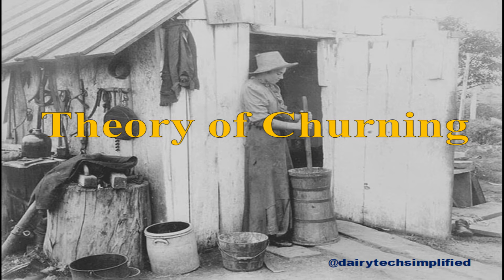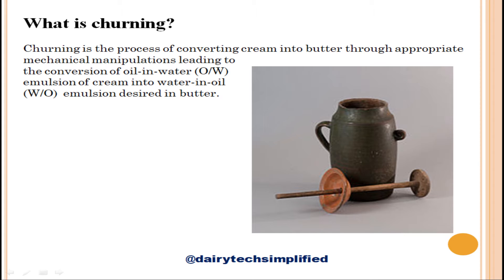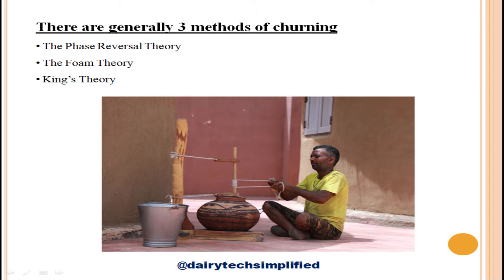Today we are going to learn about the theory of churning. Churning is the process of converting cream into butter through appropriate mechanical manipulations, leading to the conversion of an oil-in-water type emulsion of cream into a water-in-oil type emulsion desired in butter. A churn was usually as simple as a barrel with a plunger moved by hand, but these have mostly been replaced by mechanical churns. There are generally three methods of churning.